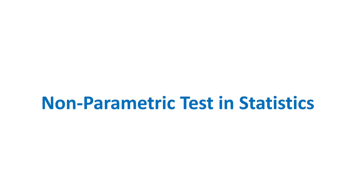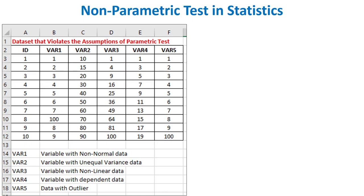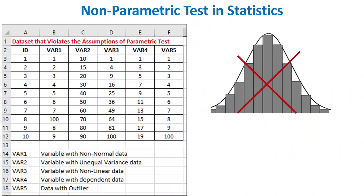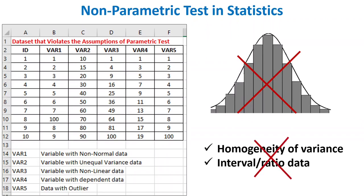What is a non-parametric test in statistics? A non-parametric test is a statistical test that is used to analyze data that does not meet the assumptions of parametric tests, particularly concerning the distributional shape of the data or the level of measurement. Non-parametric tests are used when data cannot be assumed to be normally distributed or when the assumptions of parametric tests, such as homogeneity of variances or interval ratio data, are violated.